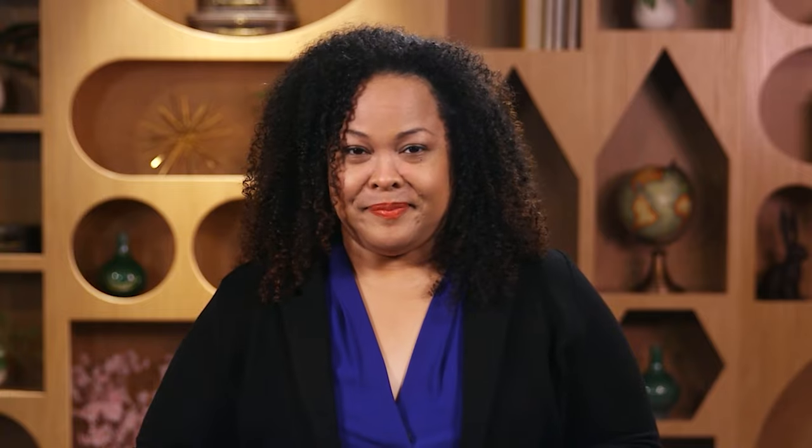If you were having a party, you wouldn't want to invite someone that you knew wouldn't want to come, right? The same is true in regards to sending your email to someone who wouldn't care about the content in it. In this video, you'll learn the basics of email list segmentation and its benefits. Segmentation is the practice of dividing an email subscriber list into smaller groups based on criteria like interests, location, or purchase history. Once you build an email list, you need to segment it. Using segmentation, a company is able to deliver the most relevant content to its subscribers, and the more tailored and personalized the email is, the more likely subscribers are to enjoy their emails, which can result in sales and brand loyalty.